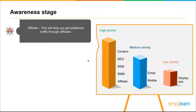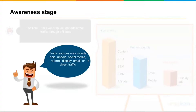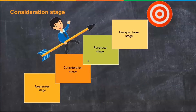Traffic sources in the awareness stage may include paid, unpaid, social, referral, display, email, or direct. So they could come from all different types of channels even though you're focused on content. Now that we've gotten the word out via all these different marketing channels, there's the consideration stage — people are aware of us, and now they're considering us. That's the next stage in the process.